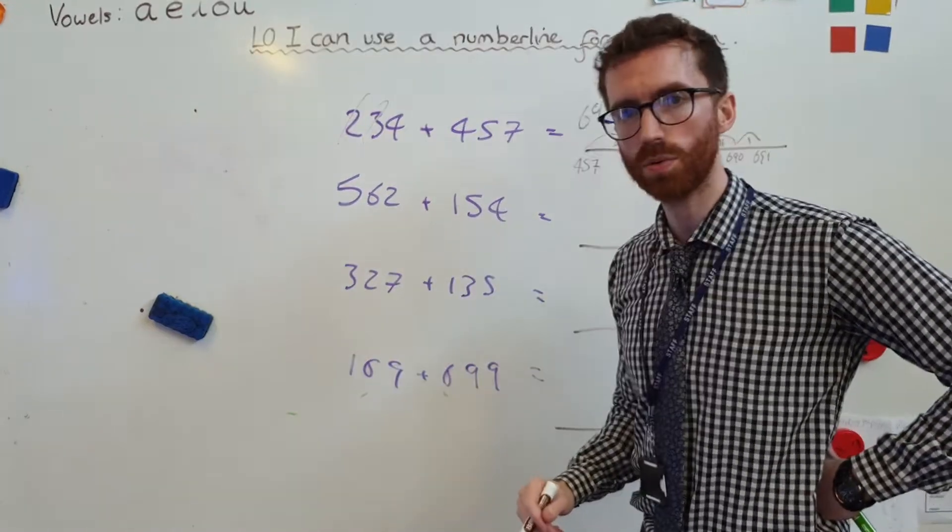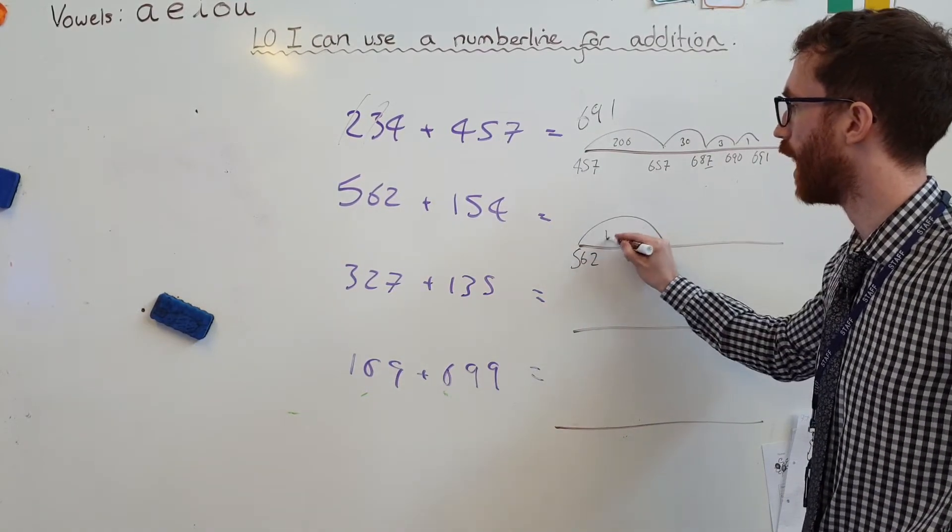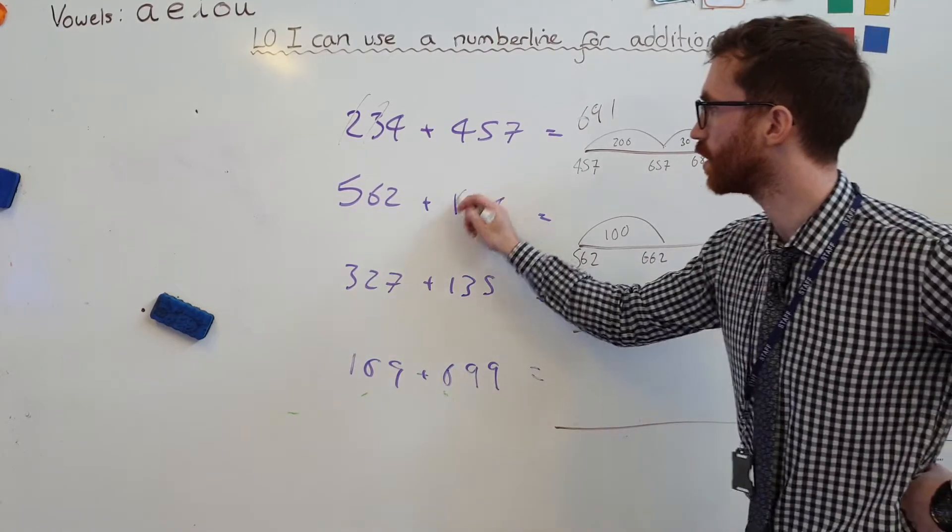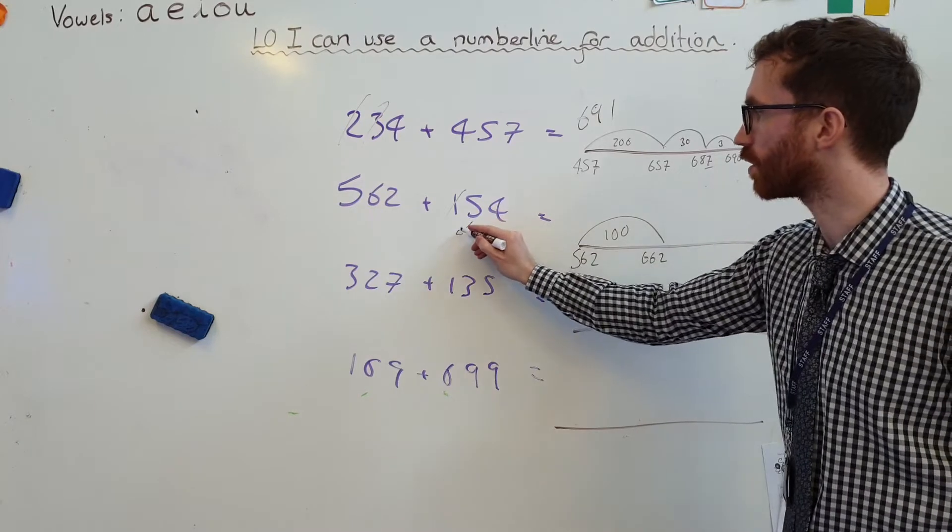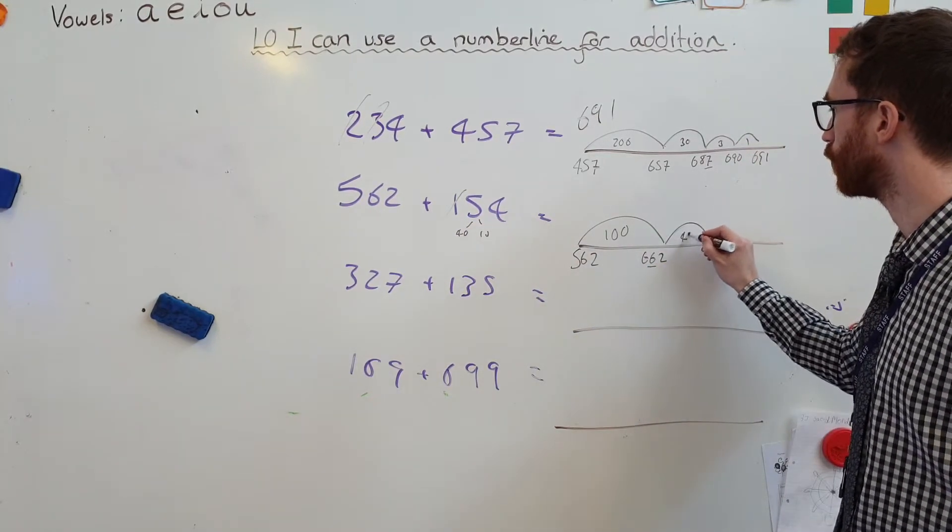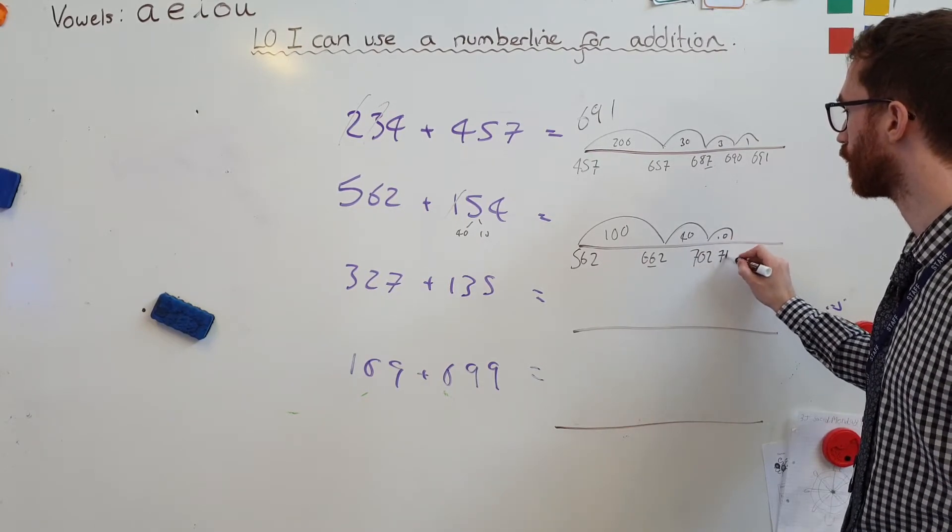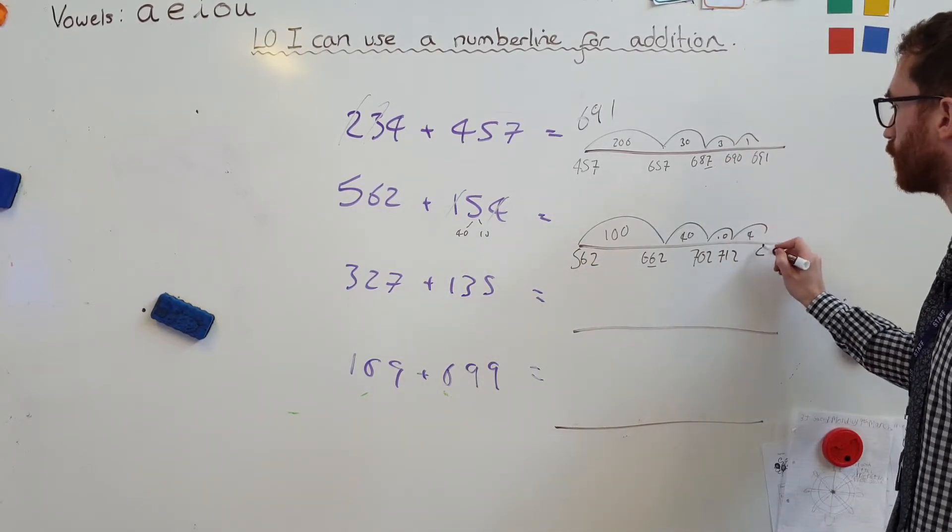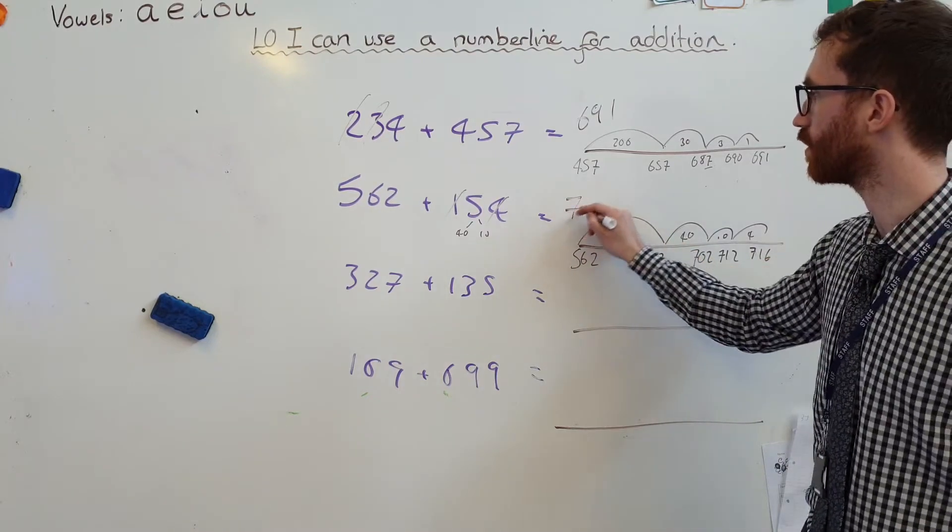Next one, 562, add 154. 562 here. I'm going to add the 100, gets me to 662, gone. Add the 50, well, do you know what, I'm going to do my number bonds, so I'm going to turn that into a 40 and a 10. So, add the 40, gets me to 702. Add the 10, gets me to 712. And then I've got 4 left to add, which gets me to 716. So, that's 716.